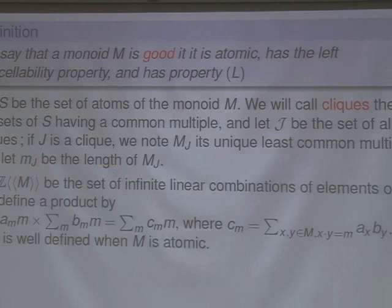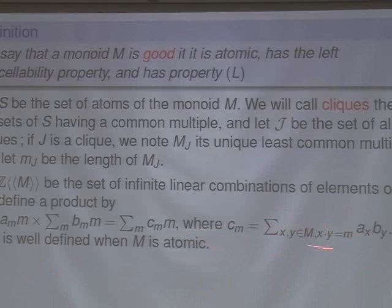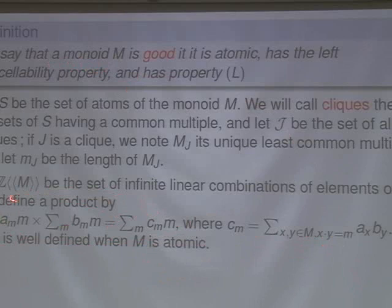MJ doesn't always exist. If you take the set of all infinite linear combinations of elements of M, you can define a product on them just by extending the product of the monoid: you take all elements X, Y belonging to M such that their product equals M and multiply the corresponding coefficients. This is not always well defined because you could have an infinite sum, which would not make sense. But when M is atomic — so in particular when M is a good monoid — then this sum will be finite and defines a product making this into a ring, an algebra ring.